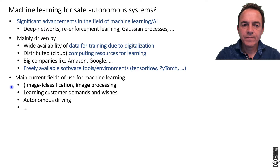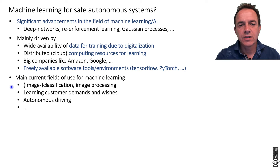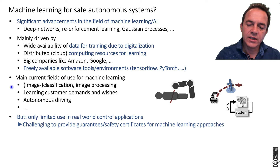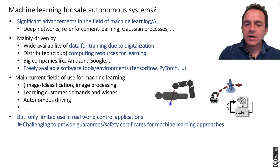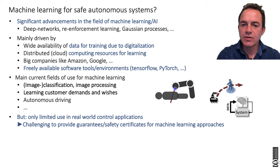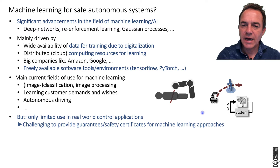However, you also need to realize these approaches are currently mainly used for image processing, learning customer demands, or partially for autonomous driving. So far, they have not really intruded into control — there are not that many real-world control applications. The reason is that it is very difficult to provide guarantees. If you have a robot operating, it should not hit the patient or cut the wrong organ, and a robot should not collide with a person.